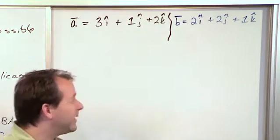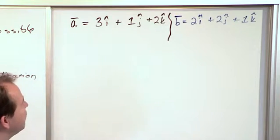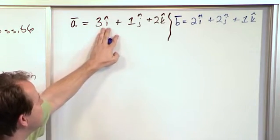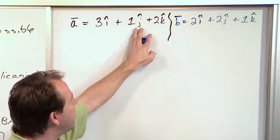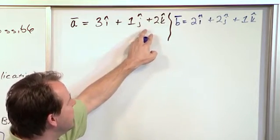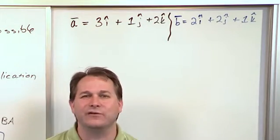And when you really think about it, just kind of use your imagination with me. We know that this number 3 corresponds to the x direction. And we know that this number 1 corresponds to the y direction. That's what this j thing means. And we know that 2 corresponds to the z direction.